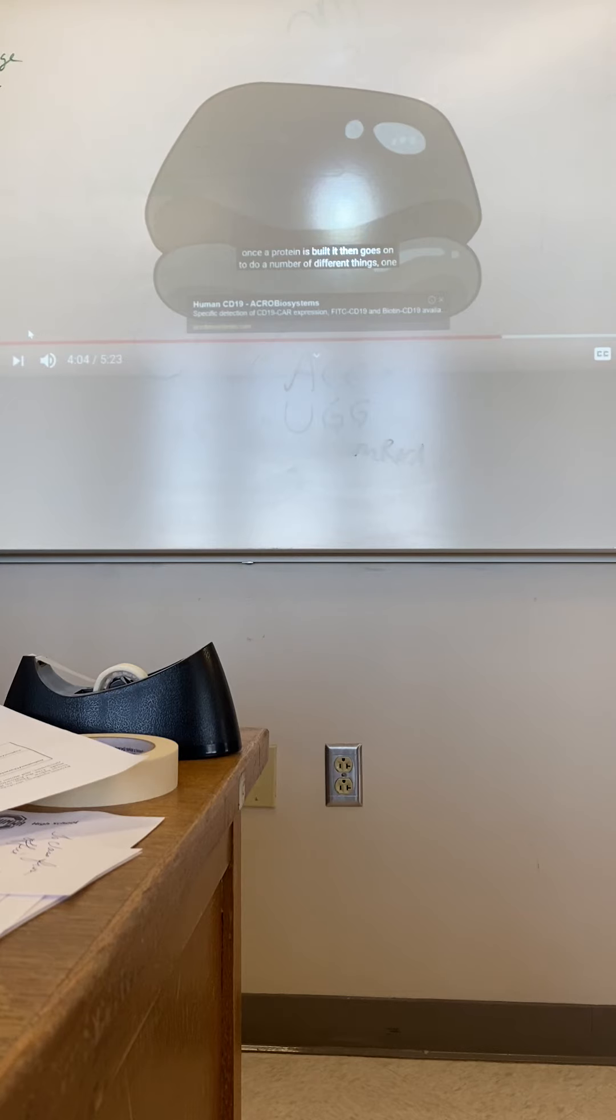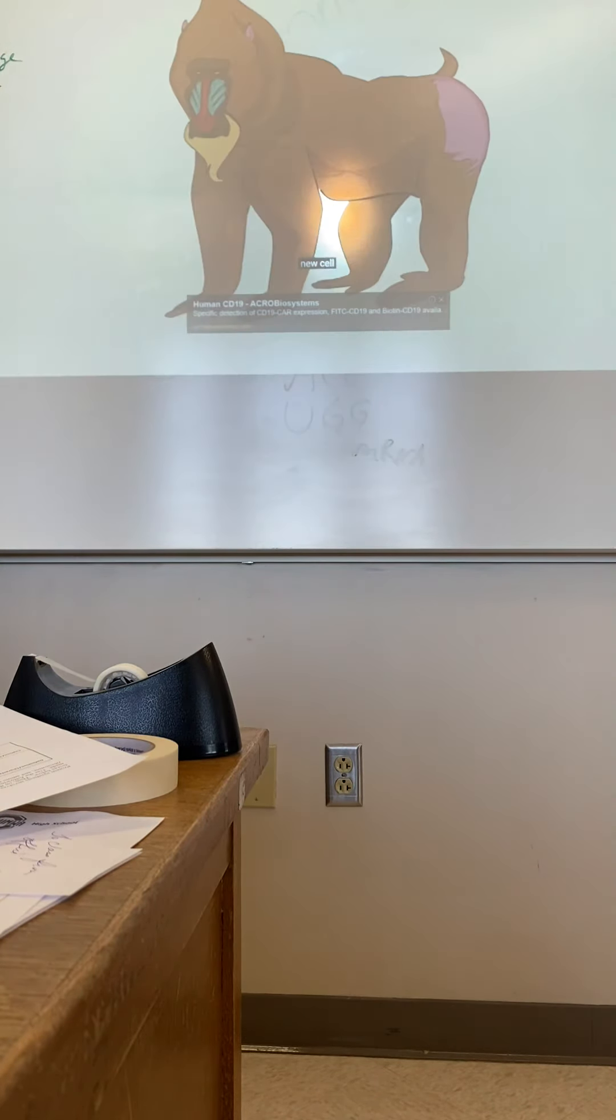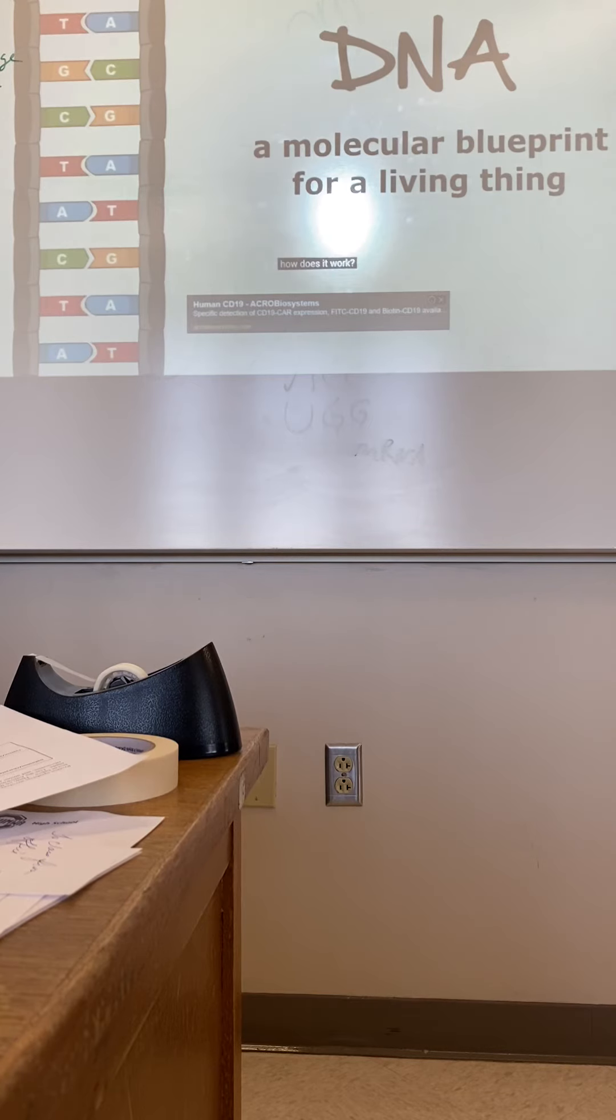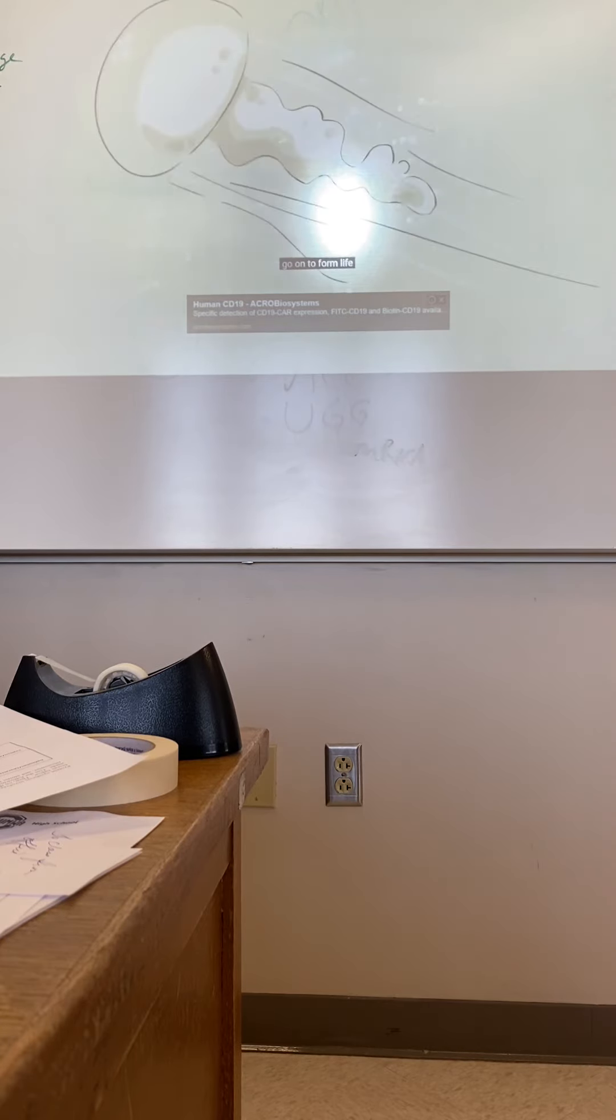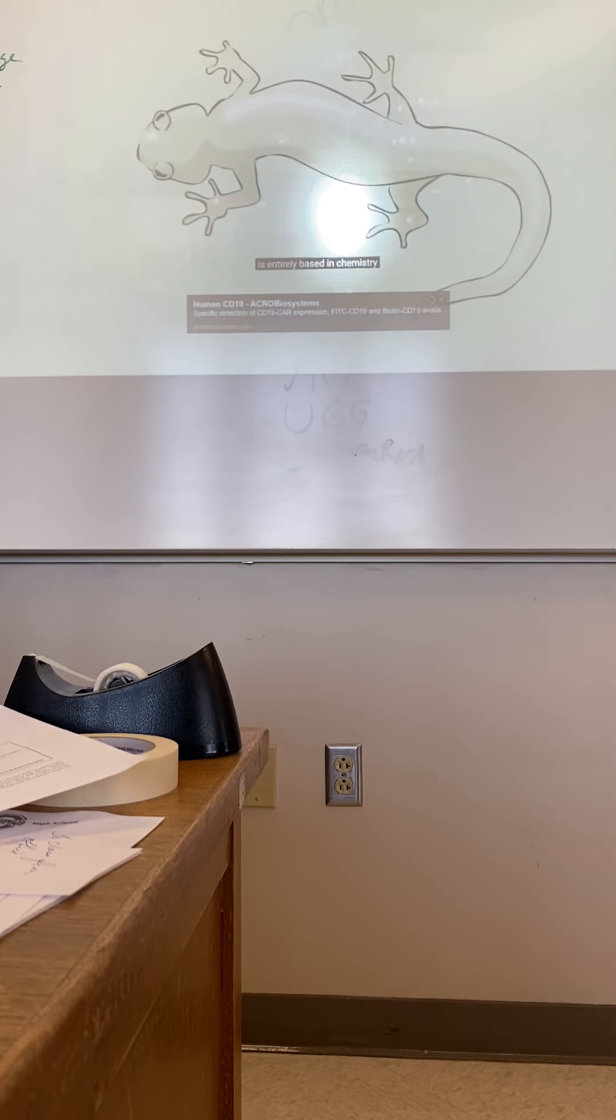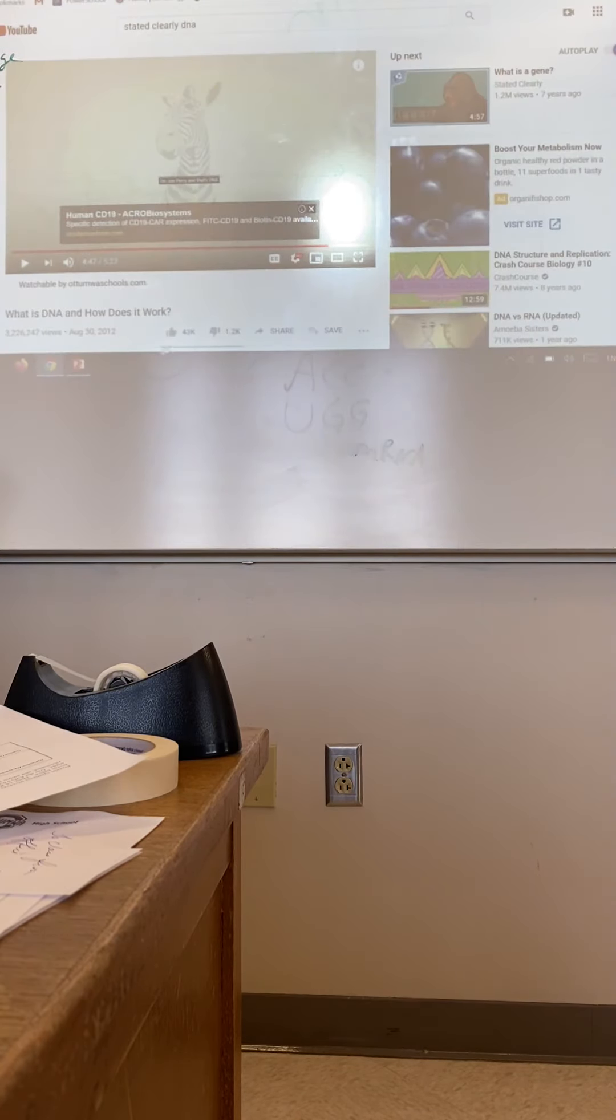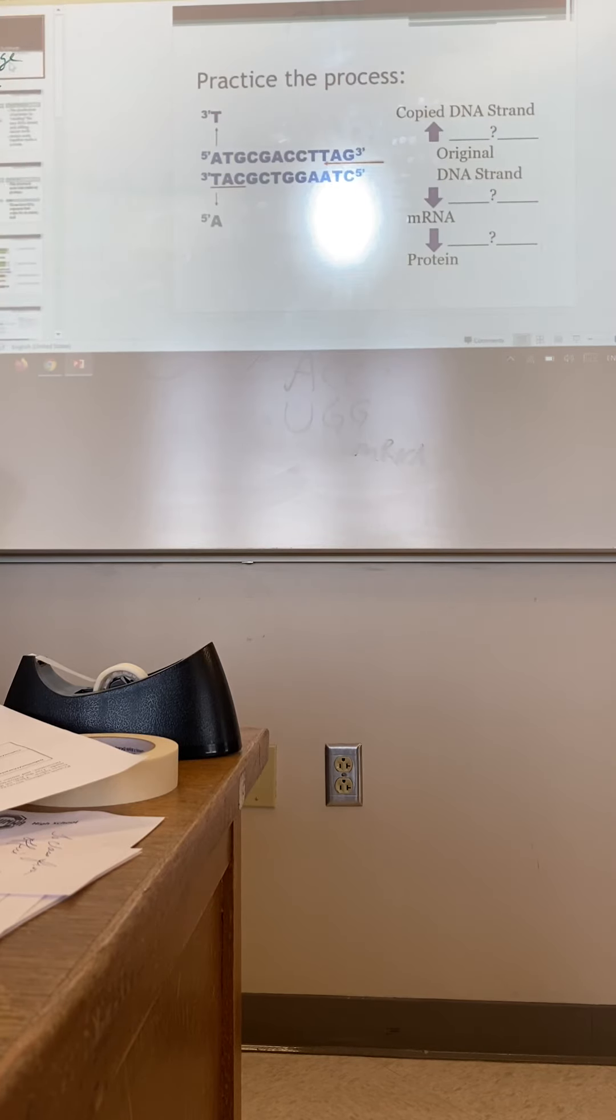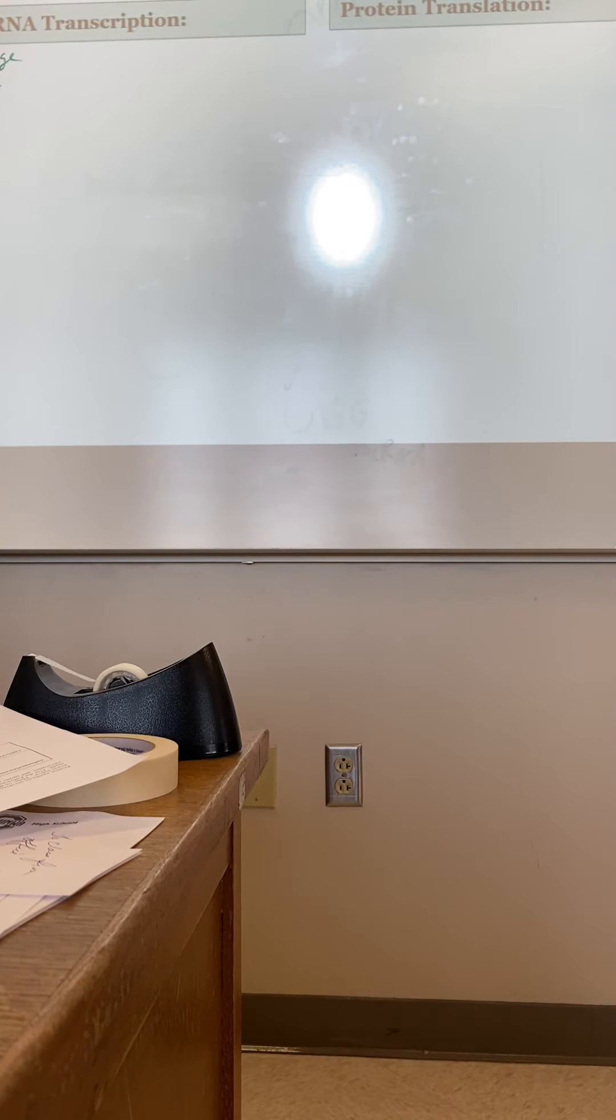Once a protein is built, it can then go on to do a number of different things, one of which could be to help form a brand new cell. So to answer the original question, what is DNA? DNA is a molecular blueprint for a living thing. How does it work? DNA creates RNA, RNA creates protein, proteins go on to form life. This entire process, as complicated, as sophisticated, as magical as it might seem, is entirely based in chemistry. It can be studied, it can be understood. All right, I'm John Perry and that's DNA. Okay, so the powerpoint very quickly. All this was in your readings and in your stuff, so we're going to go through it super fast.